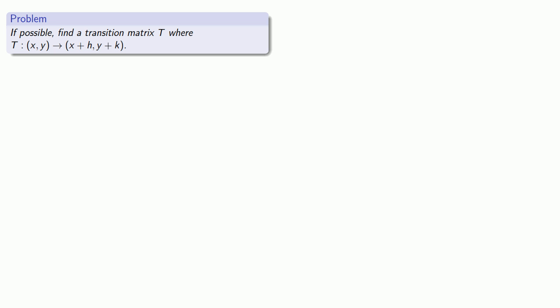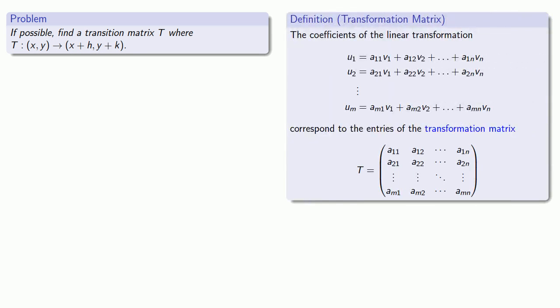Well, let's try it out. Let's see if we can find a transition matrix T, where T sends the point (x, y) to the point (x + h, y + k). So our transition matrix gives us the coefficients of x and y in the formulas that allow us to compute the new values of x and y.